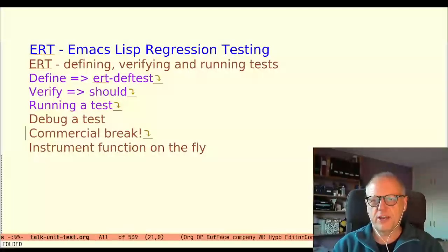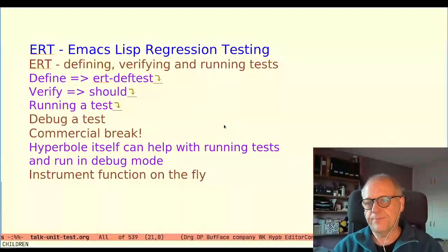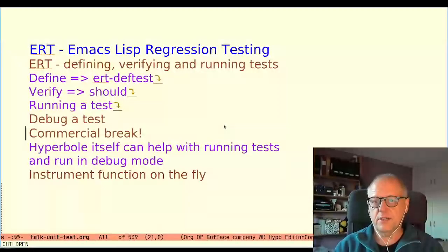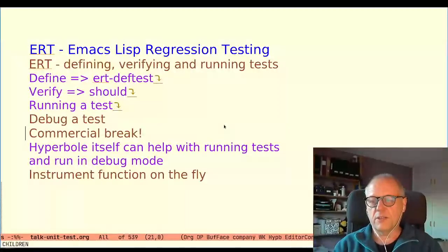It's time for a commercial break. Hyperbole itself can help with running tests and also help with running them in debug mode. That is because hyperbole identifies the ert-deftest as an implicit button. An implicit button is basically a string or pattern that hyperbole has assigned some meaning to. For the string ert-deftest it is to run the test case. So you activate the button with the action key. The standard binding is the middle mouse button or from the keyboard meta return.